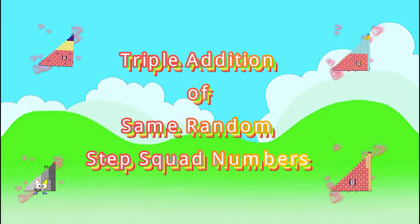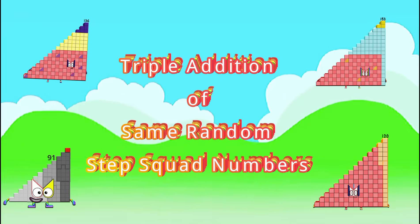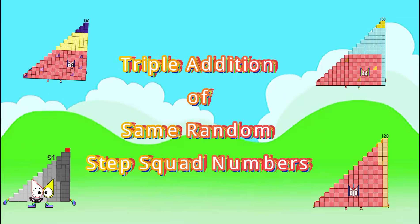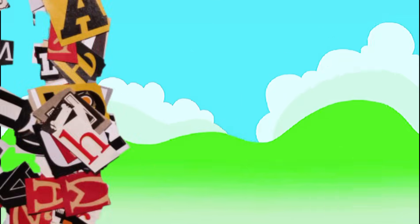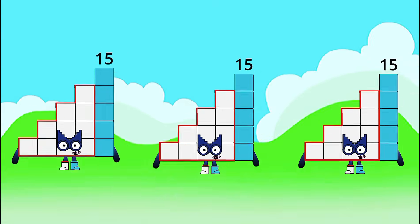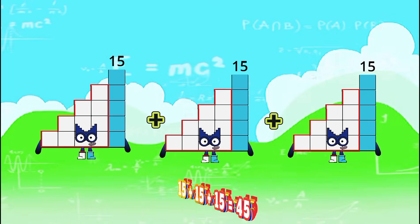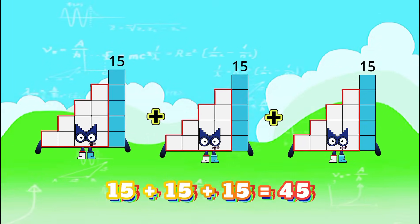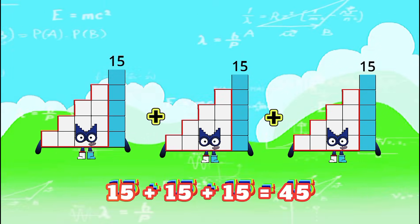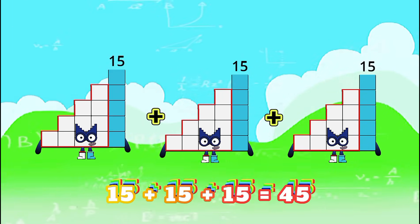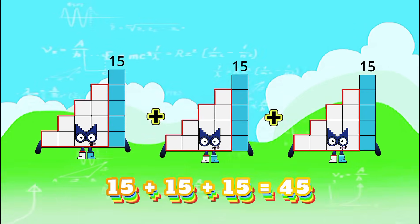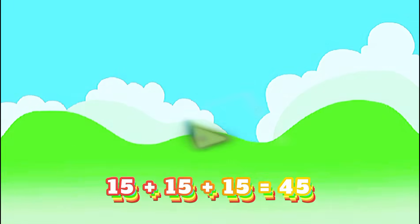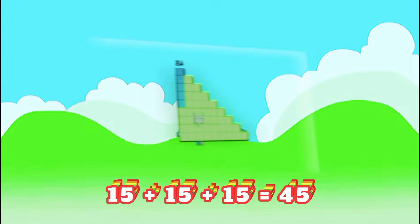Triple addition of same random status card numbers. 15 plus 15 plus 15 equals 45.